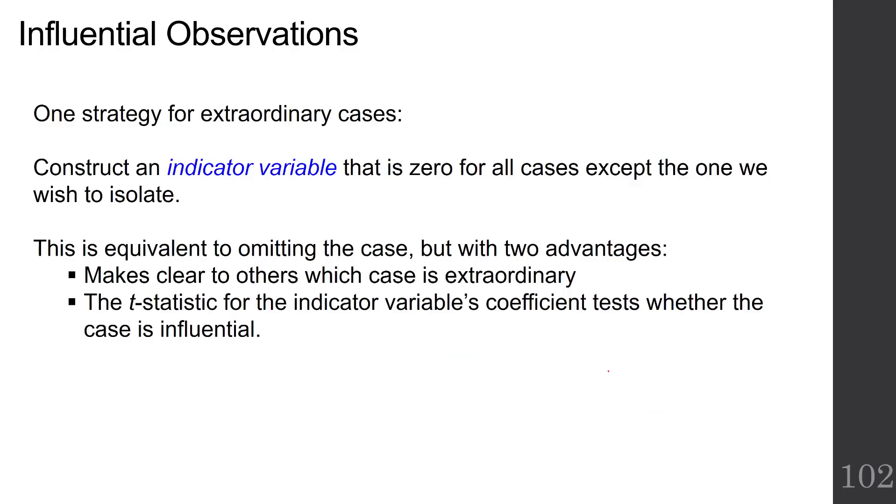So what do we do with these? We can't just remove them and not ever talk about them again. One strategy for dealing with them is to construct an indicator variable that's 0 for all the cases except for the one that we want to isolate. This is equivalent to omitting the case, but with two advantages: It makes clear to others which case is extraordinary, and the t statistic for the indicator variable's coefficient tests whether the case is influential.